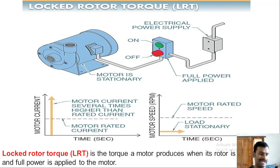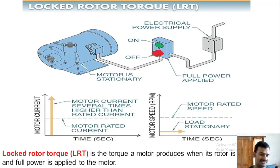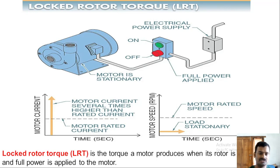Locked rotor torque also applies when a running motor becomes jammed due to physical conditions — for example, when the motor cannot pull the load with the given supply. In that standstill or jammed condition, the rotor is stationary. When a little extra power is given and the rotor starts to overcome the load and rotate, the torque at that point is also called locked rotor torque, but it is not called starting torque.